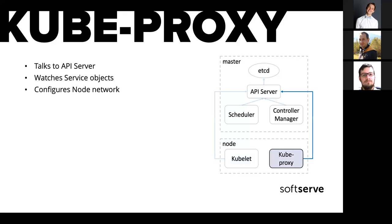The kube-proxy is an interesting one. It talks to the API server, watches service objects, and configures the Kubernetes network according to those service objects. In a Kubernetes world, we need a lot of IP addresses on a node to run many different containers. Kubernetes uses what's called an overlay network — inside the cluster you have another layer of networking specifically for the containers running inside it. Kube-proxy is one of the components involved in this, and it also configures routing inside the nodes to make pods available through service objects when you configure them.